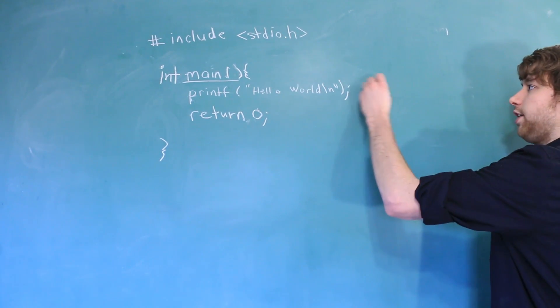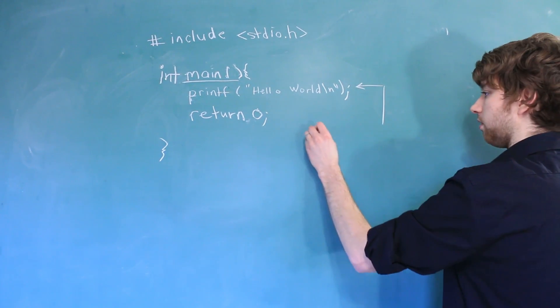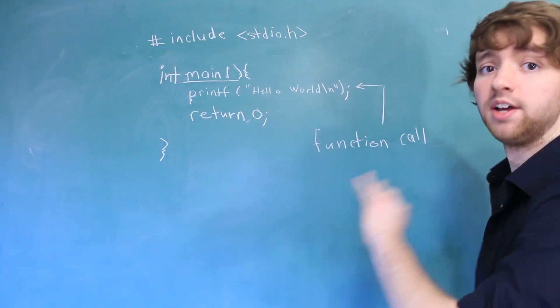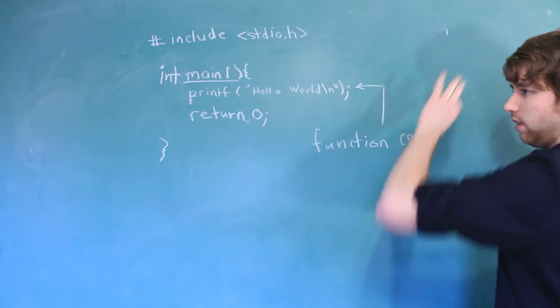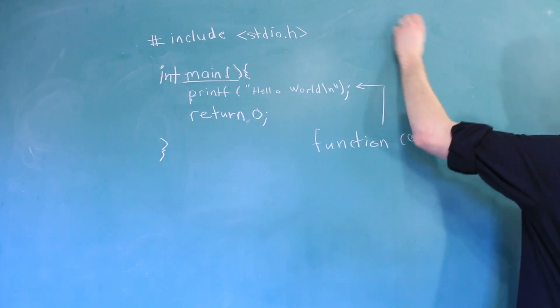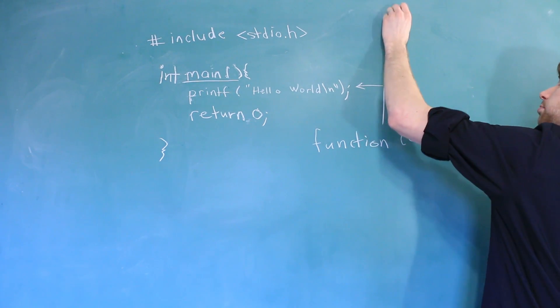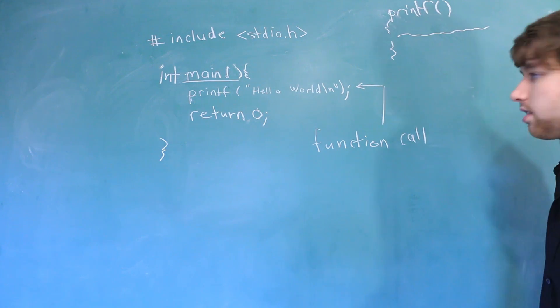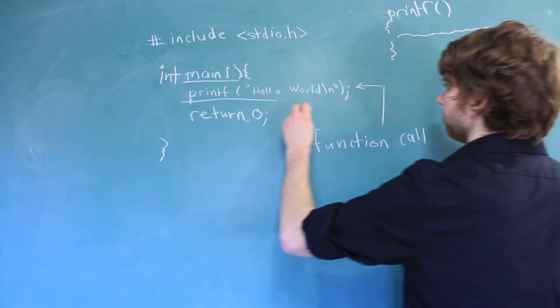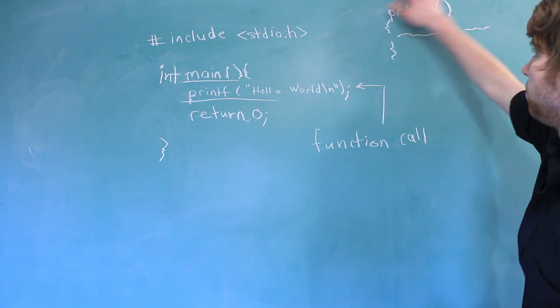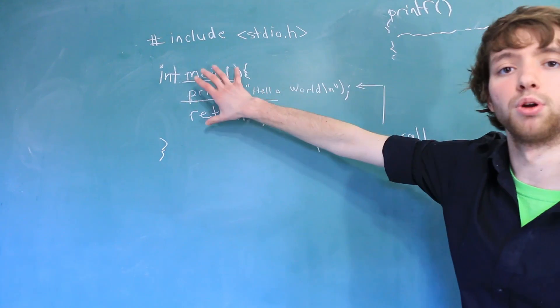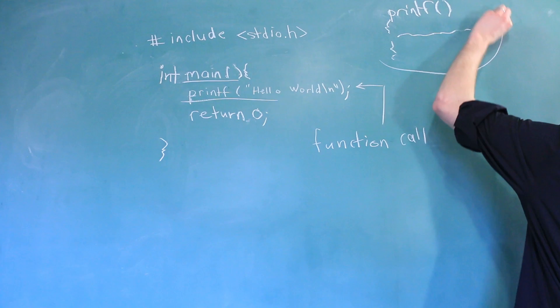This line right here is actually another function call. That means somewhere there is a function called printf that was defined. So let's just say we have this file over here and inside of that file, we have printf and then the algorithm of how printf works. Here we are calling that function. So we're just saying, hey, we want to use this code over here inside of our program.